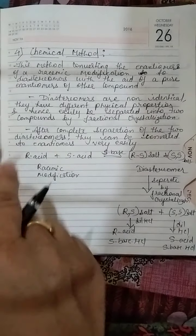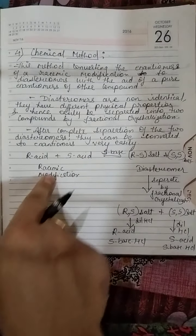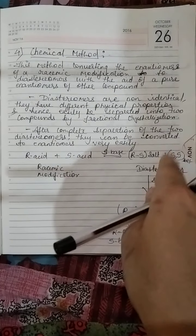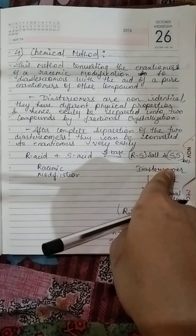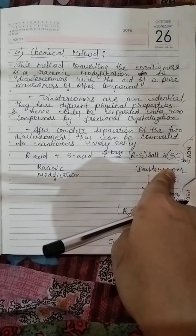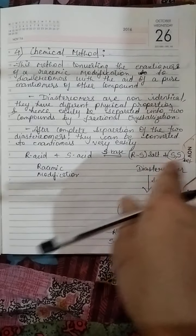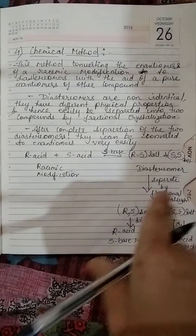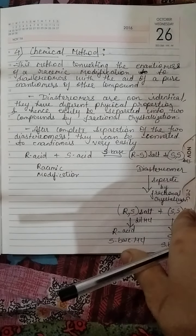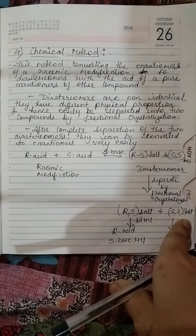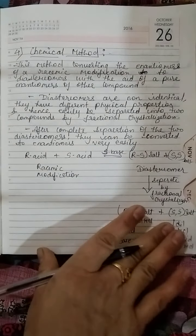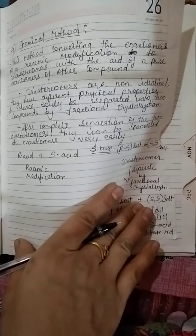To summarize this method: we converted our racemic mixture to diastereomers. After converting to diastereomers, it becomes very easy to separate the enantiomers. We separate the two diastereomers by crystallization, then add dilute HCl to both diastereomers and obtain the separate pure enantiomers. This is our fourth method for racemic mixture separation.